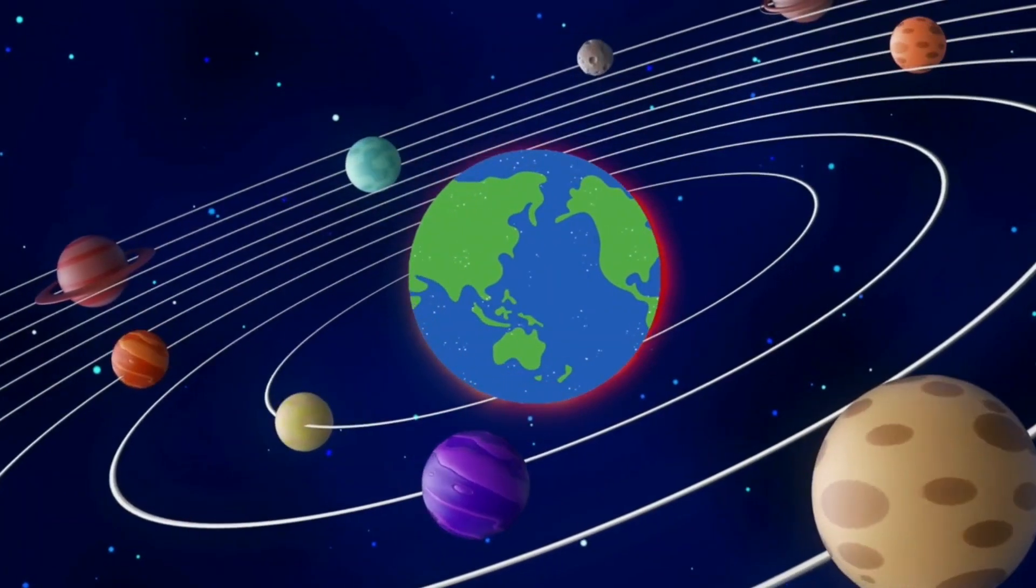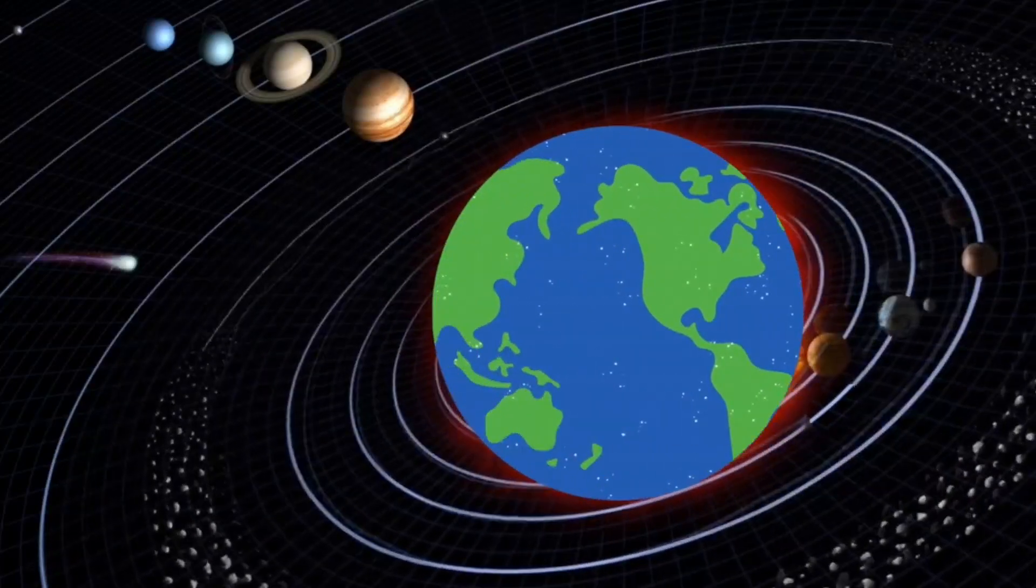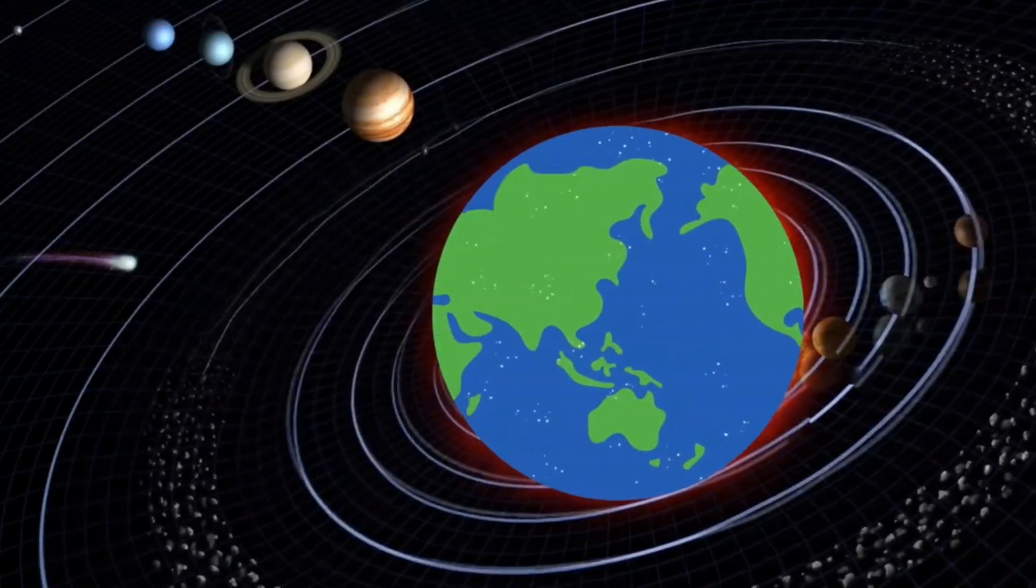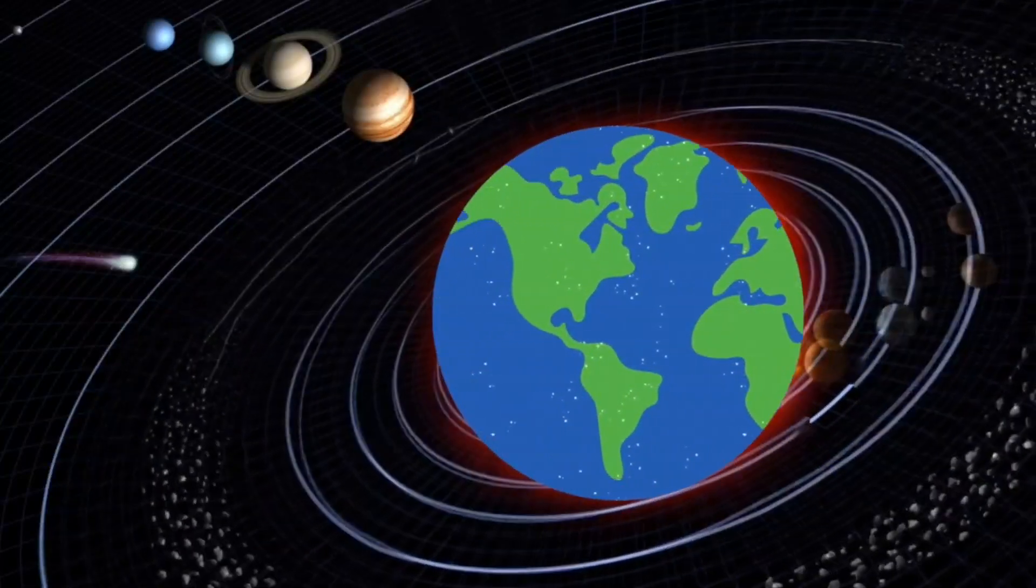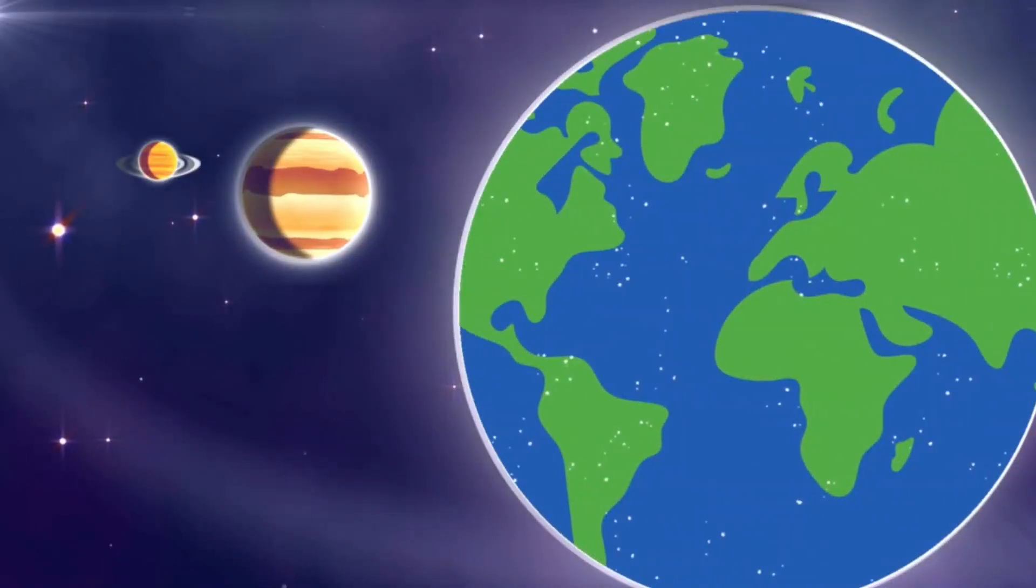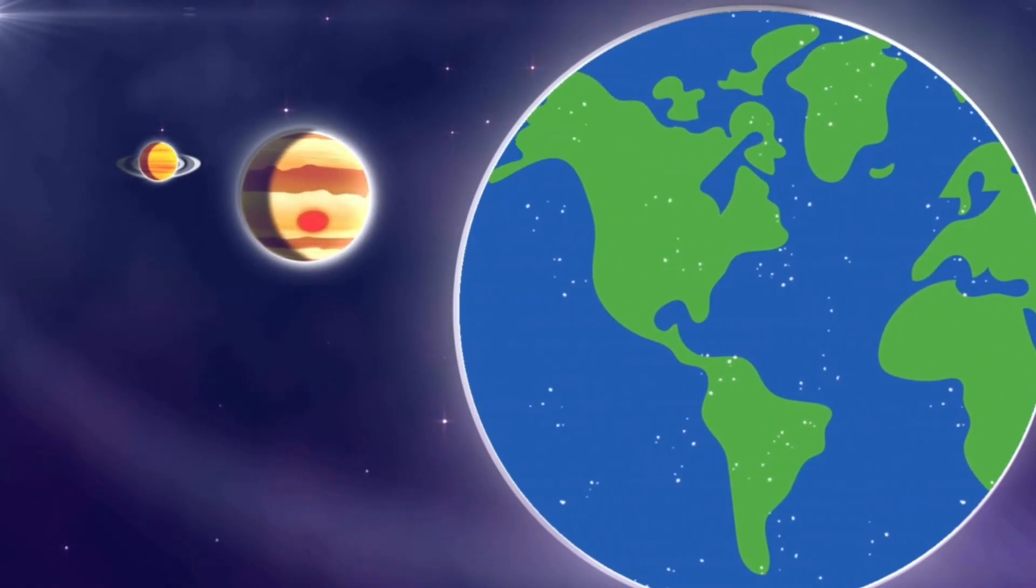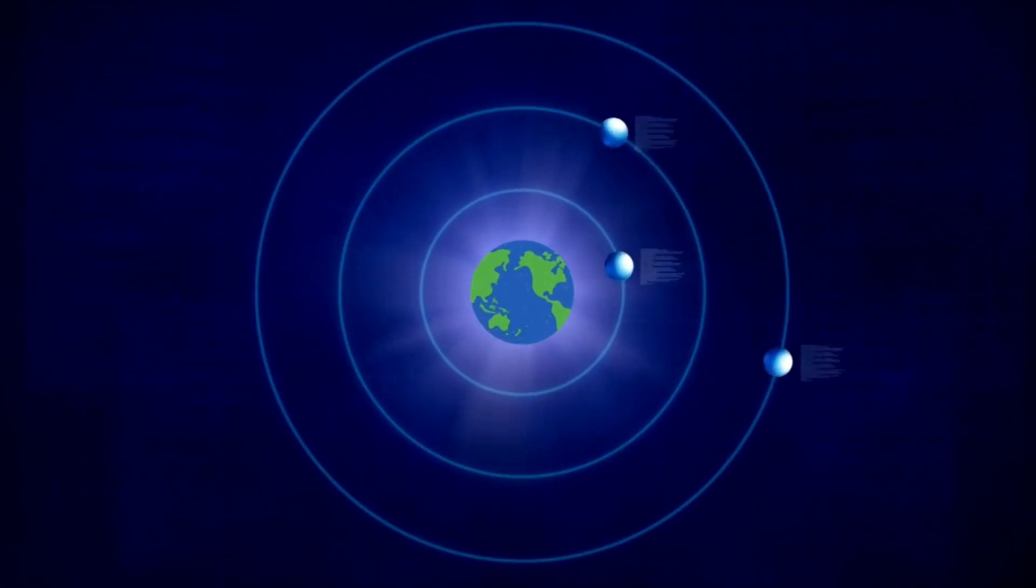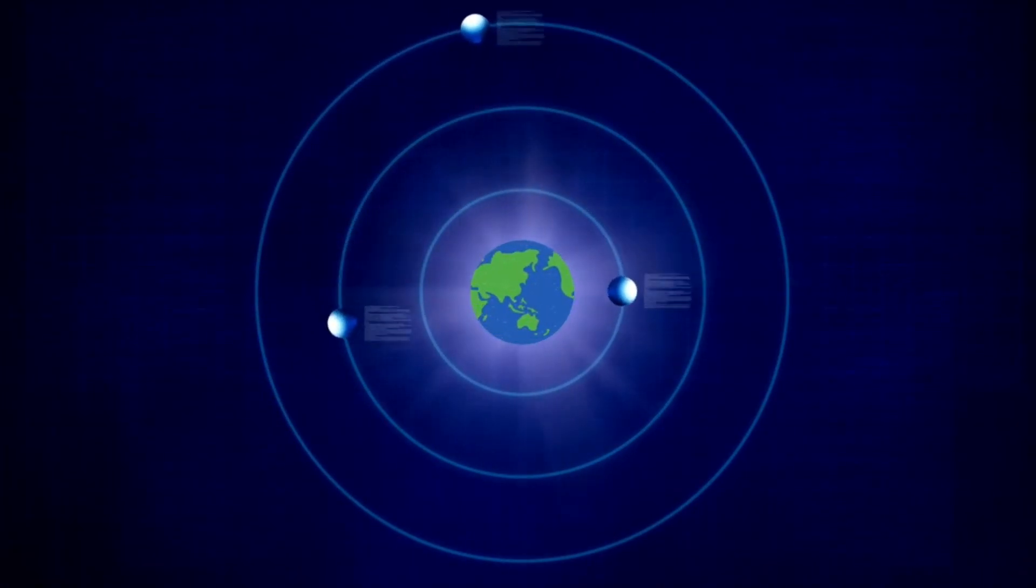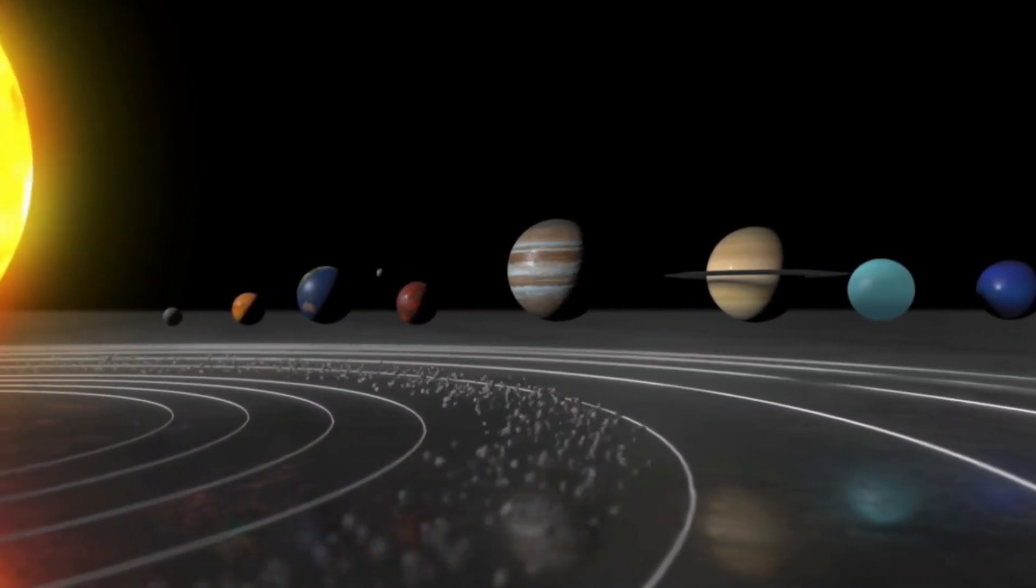The idea of all the planets in our solar system orbiting Earth is a fascinating concept that has intrigued scientists, writers, and dreamers for centuries. While this scenario contradicts the fundamental principles of our understanding of the universe, exploring this hypothetical scenario can offer valuable insights into the dynamics of our solar system and the consequences of such a change. We'll delve into the hypothetical scenario of all the planets orbiting Earth, examining the potential implications on our planet and the entire solar system.